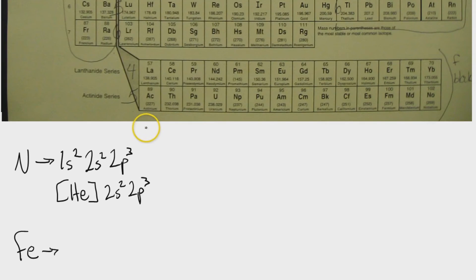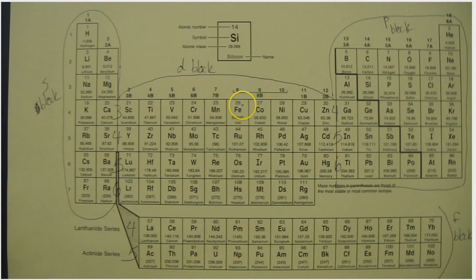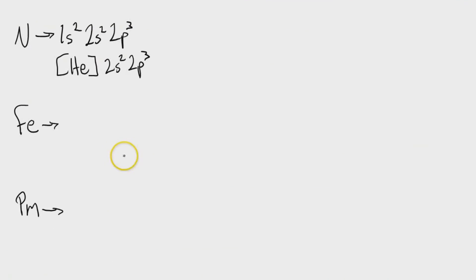Let's move on to iron. So iron is right here. It is element number 26. It is in the 3d block. In fact, it is 3d 1, 2, 3, 4, 5, 6. However, we also need to take into account all of the elements that come before it. So here's how we're going to write it out.